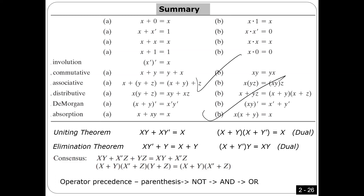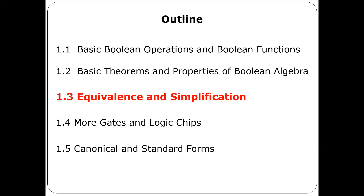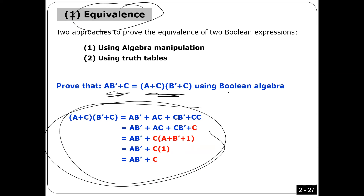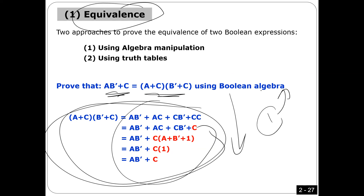I summarized everything in a table — in exams I'm going to give you this slide printed out. It summarizes all rules and theorems. After that, one use of Boolean algebra is equivalence: given two functions, you can prove they are equal using Boolean manipulation, or alternatively you can show the truth table for each one — if the results are identical, the two expressions are identical.